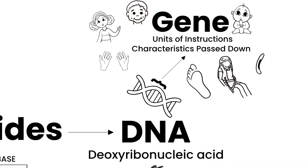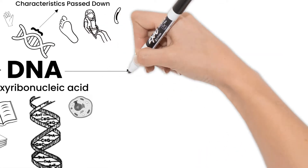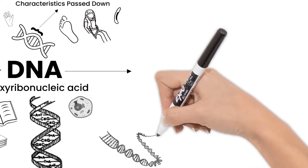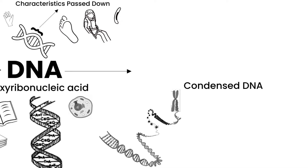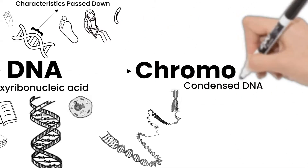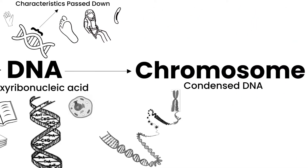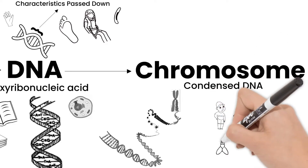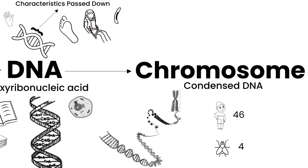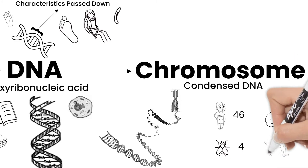DNA contains lots of genes on a single strand. A strand of DNA is twisted and compacted to take up less space in the cell, and we call it a chromosome. The number of chromosomes depends on the organism. Humans have 46 chromosomes, fruit flies have four, a potato 48, and dogs 78.